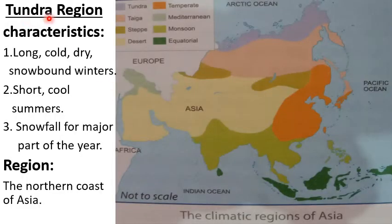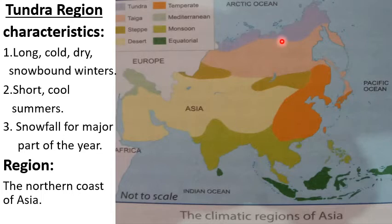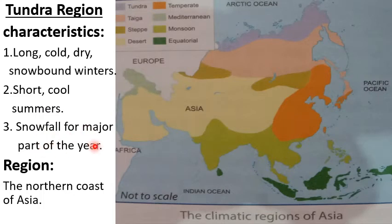Tundra region. This area, shown in purple color, is the region which experiences tundra type of climate. This is the northern coast of Asia. The characteristics of tundra climate are long, cold, dry, snow-bound winters, short cool summers, and snowfall for major parts of the year.